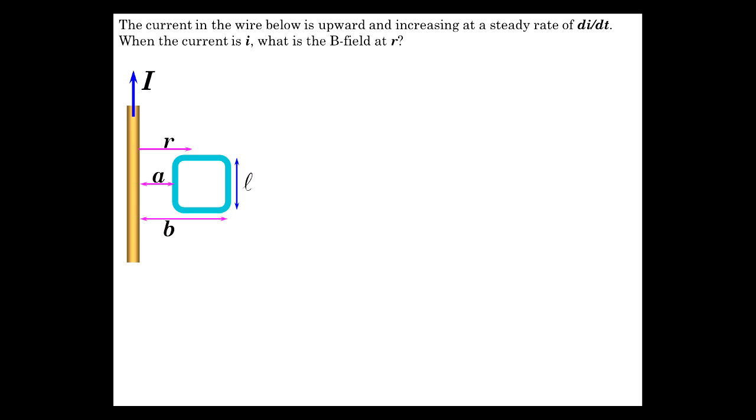When the current is I, what's the B field at radius R? So here's a loop existing here out in space, distance A to B away from the wire.